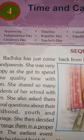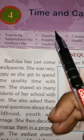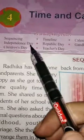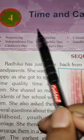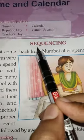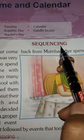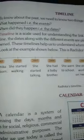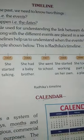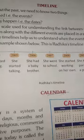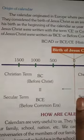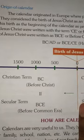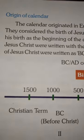Hello children! Earlier in Part 1 of Chapter 4, we studied about time and calendar, about sequencing, timeline and calendar. This is Part 2 of the same chapter and today we will study the further part of this chapter.